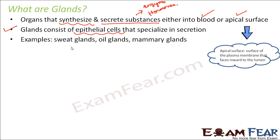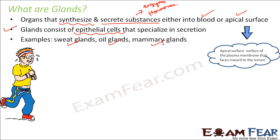Some examples of glands are sweat glands, oil glands, and mammary glands. The sweat gland: when you do a lot of physical exercise or jogging, you start sweating. You see water droplets coming out of your skin through tiny pores. That water, called sweat, is not plain water — it also has salt and other chemicals. Sweat is the secretion of sweat glands, which are specialized glands that secrete sweat onto the surface of your body.